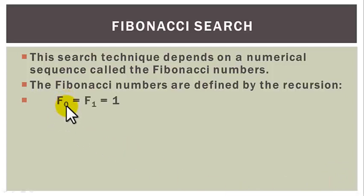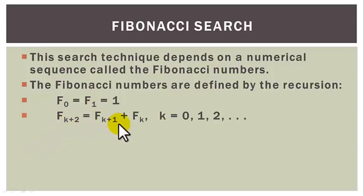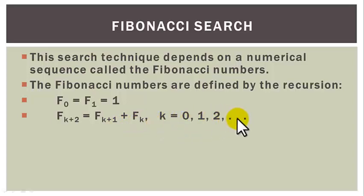F0 is equal to 1, F1 equals to 1, and Fk+2 is equal to Fk+1 plus Fk for k equal to 0, 1, 2, and so on.